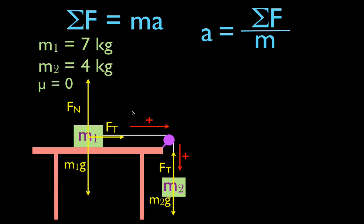Now we can apply Newton's second law. The acceleration equals the sum of the forces divided by the mass. The mass is the mass of both objects added together, so we put in m1 plus m2. We're going to sum up only the forces that are acting on the objects in the direction of motion — the forces that are affecting the acceleration. We look at each object one at a time.